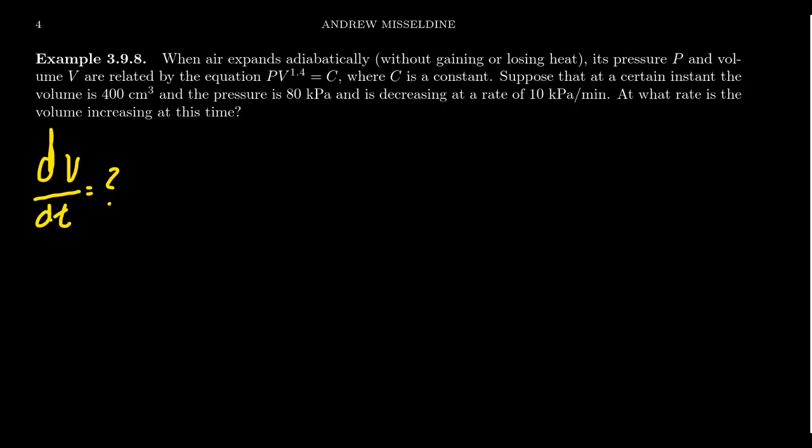What do we actually know about this problem? We know that the volume at that moment of time is going to be 400 cubic centimeters. So V equals 400 cubic centimeters. We know that the pressure at this moment of time is going to be 80 kilopascals. So P equals 80 kilopascals.